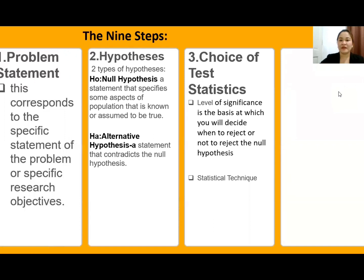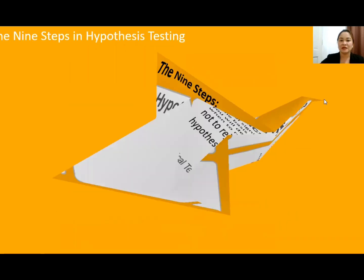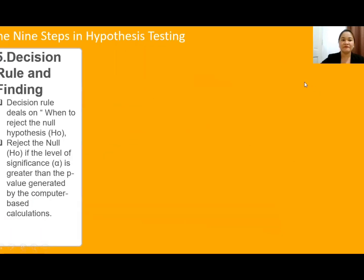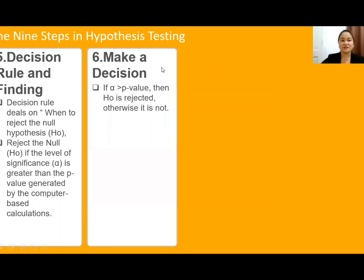Fourth, we have the computation. In your computation, you may use Excel, Minitab, or other software. Fifth is the decision rule and findings. The decision rule deals with when to reject the null hypothesis. Reject the null if the level of significance alpha is greater than the p-value generated by a computer-based calculation.